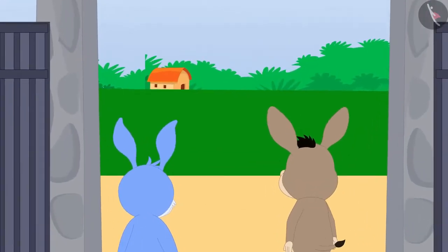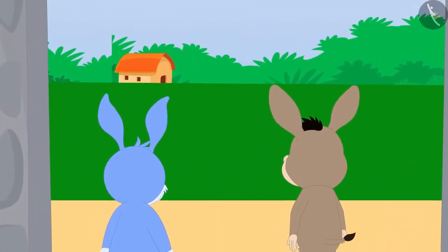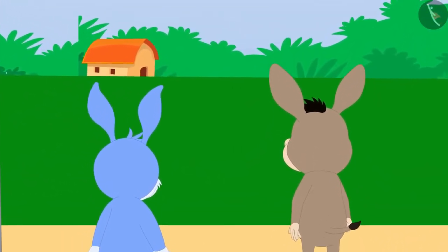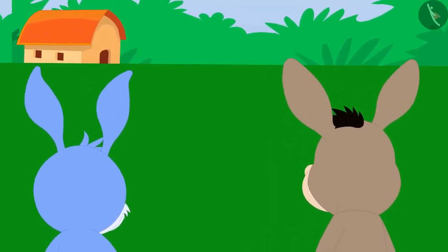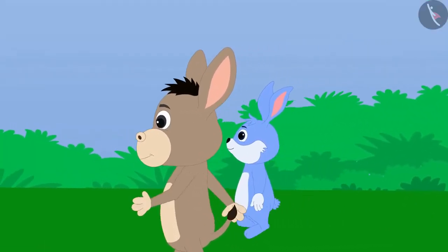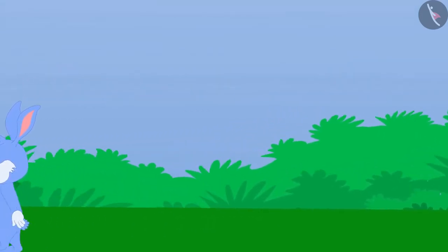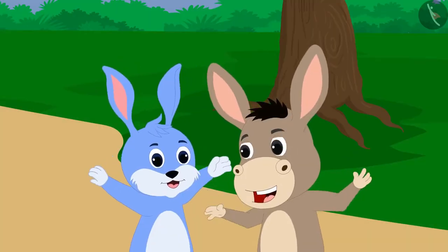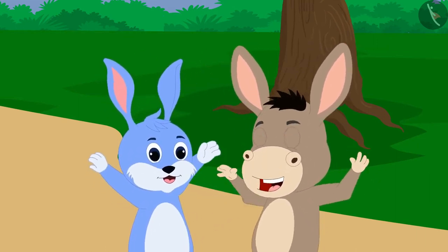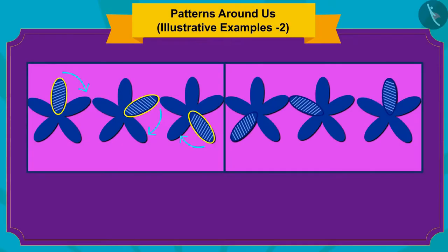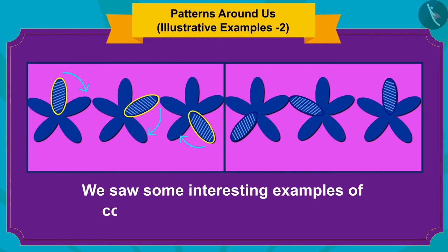Bunny and Bhola both rushed out of the jungle excitedly through this exit gate. As soon as they managed to exit the jungle, both of them started dancing happily. In this video, we saw some interesting examples of completing incomplete patterns.